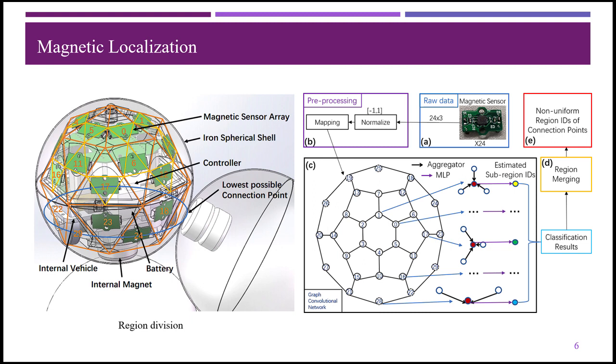When more than two regions that share the same vertex detect a connection point simultaneously, the connection point is near the vertex. In this way, the narrow areas around each edge and vertex can be regarded as new sub-regions, and 111 boundary sub-regions can be created. Finally, the whole steel spherical shell contains 199 non-uniform sub-regions, and the proposed localization algorithm can estimate the non-uniform region IDs of all connection points.